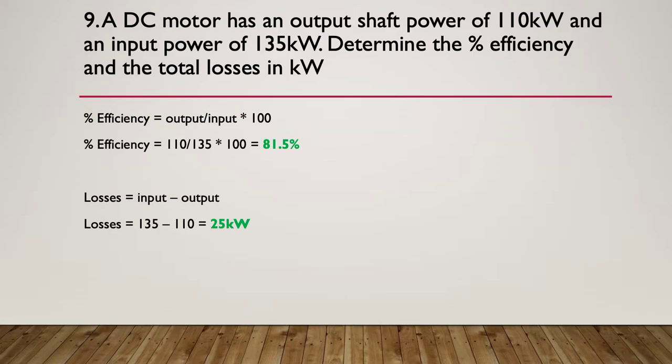So here's our calc. Our efficiency is simply going to be 110 divided by 135, so it's the numbers from the equation, output over input, and then simply multiply by 100 to turn it into a percentage. In this particular case giving us 81.5 percent.